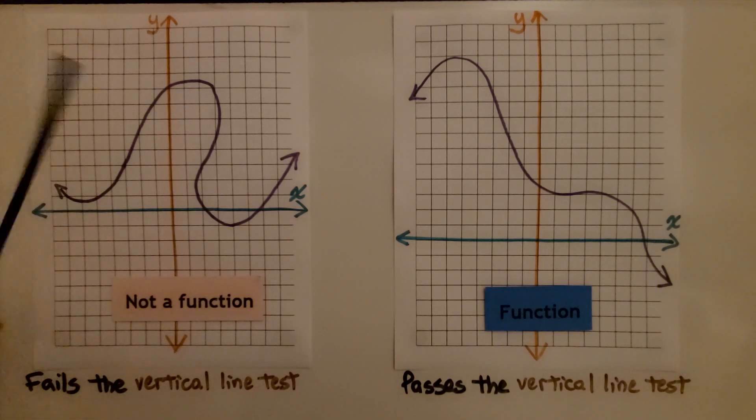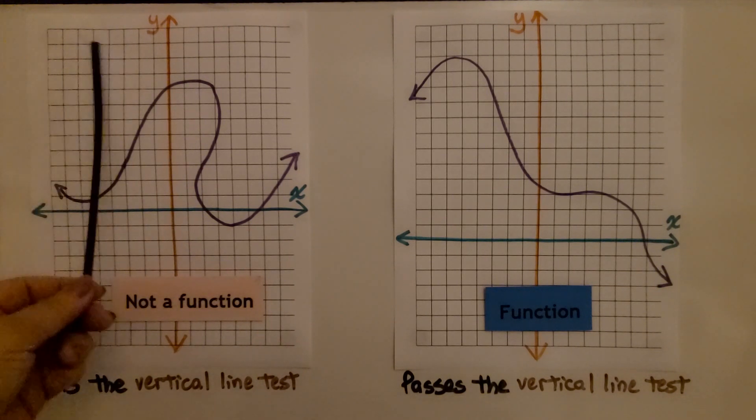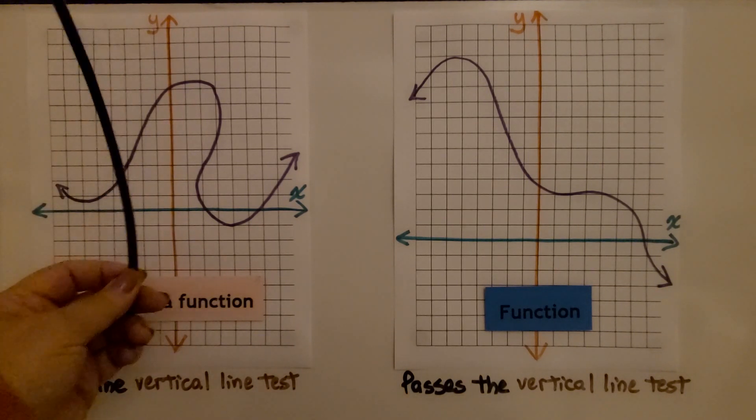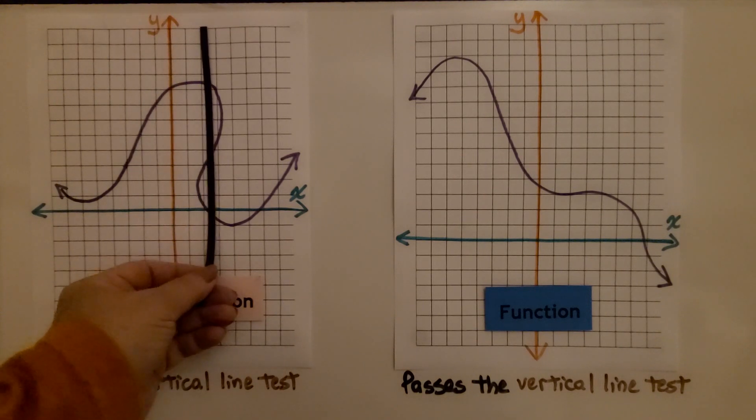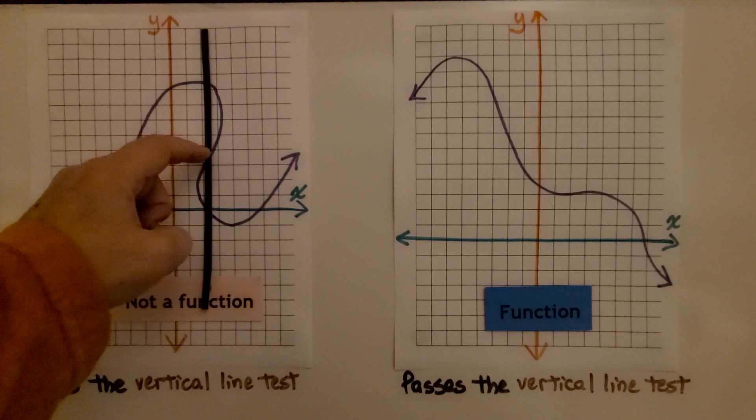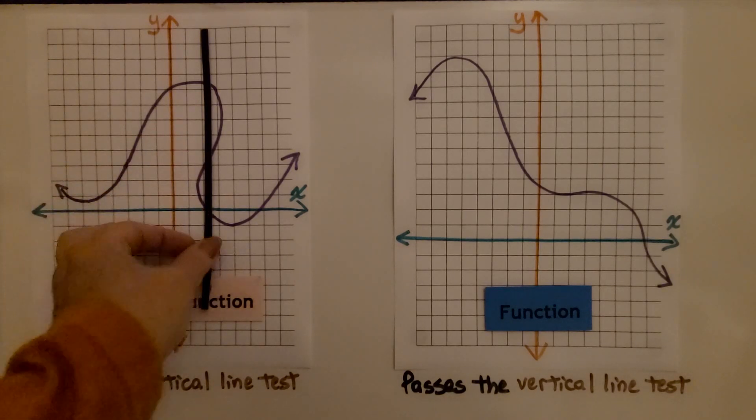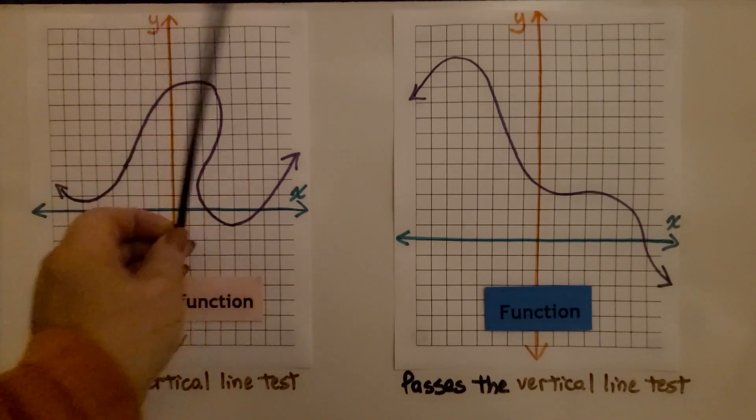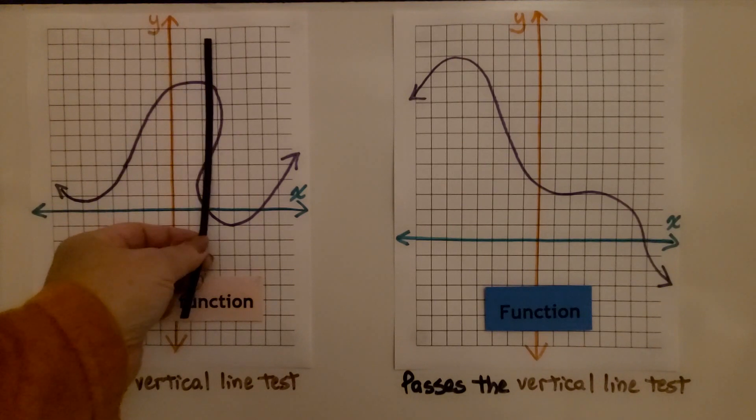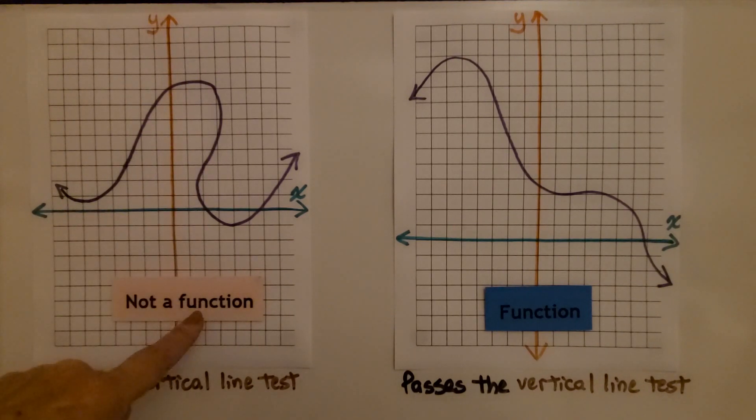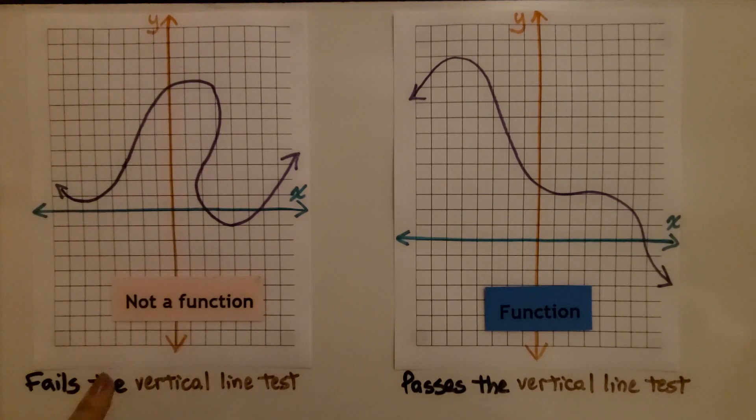Here I have my vertical line. If I put it here, it passes through it one time. If I put it here, it passes through one time. But if I put it here, it's passing through the line one, two, three times. Because there's a place on this graph that it can pass through three times, it's not a function. It fails the vertical line test.